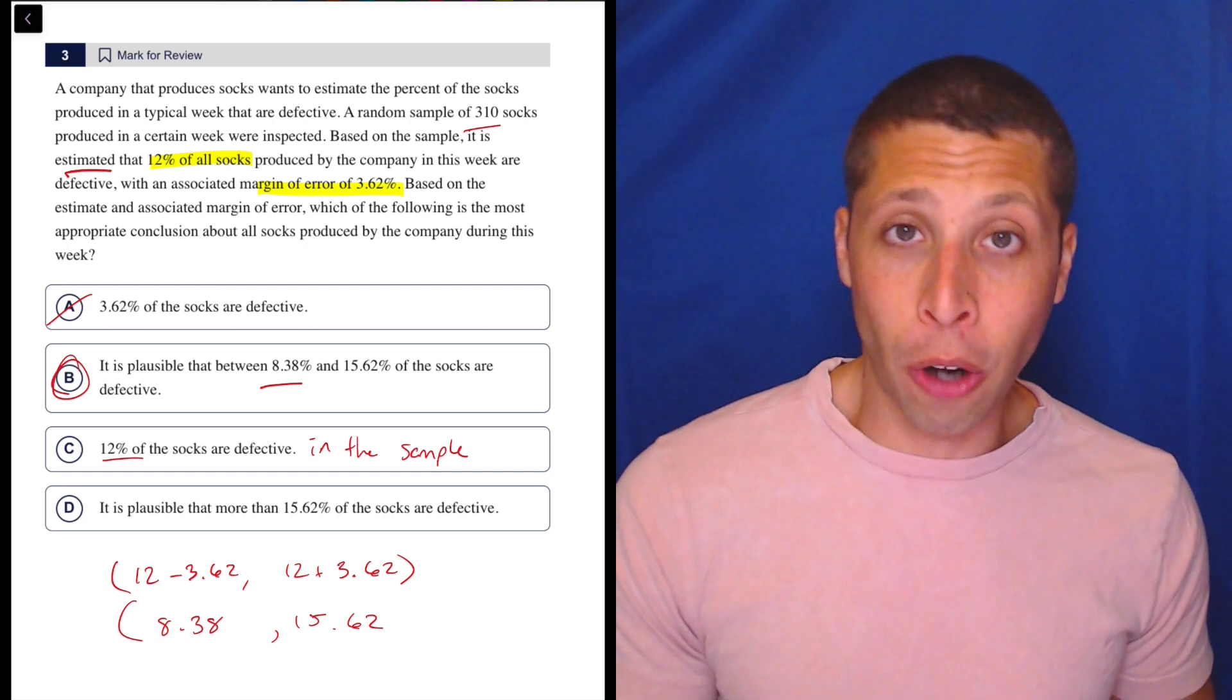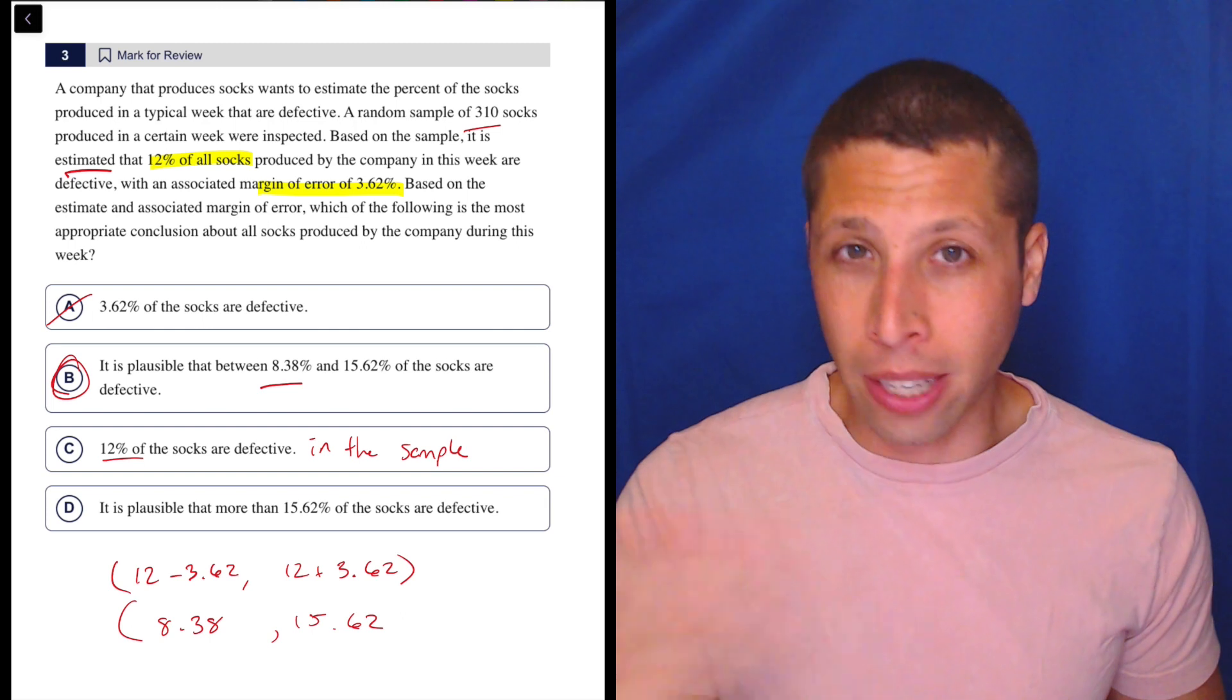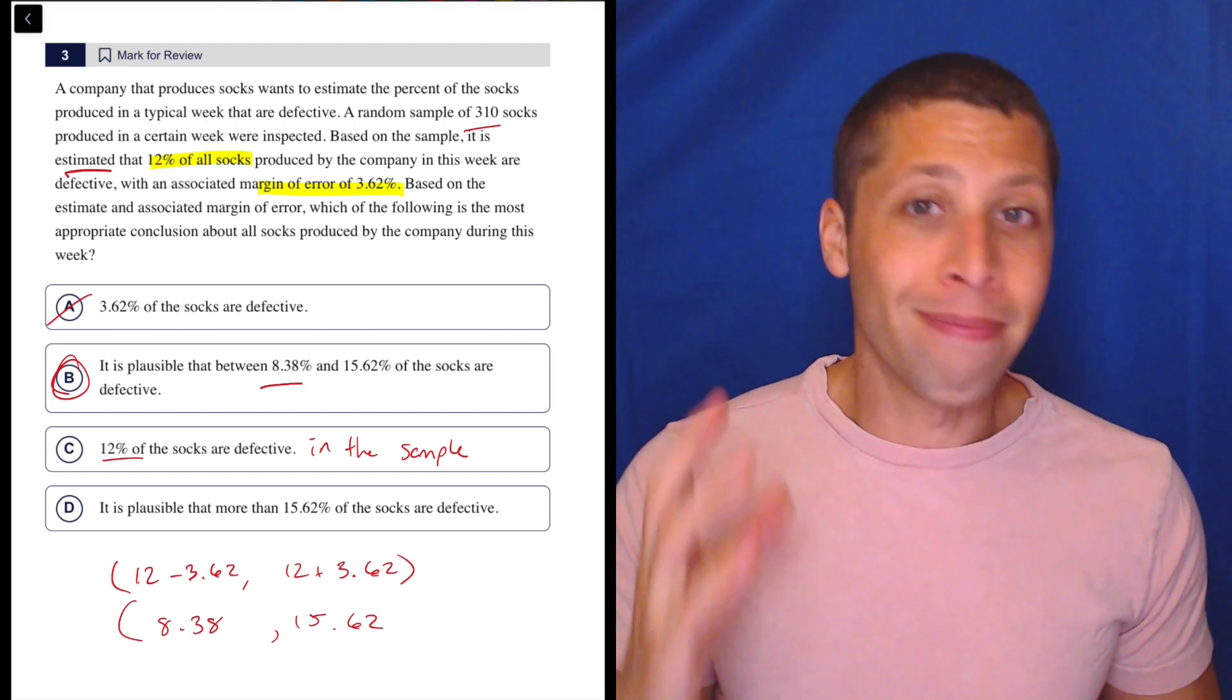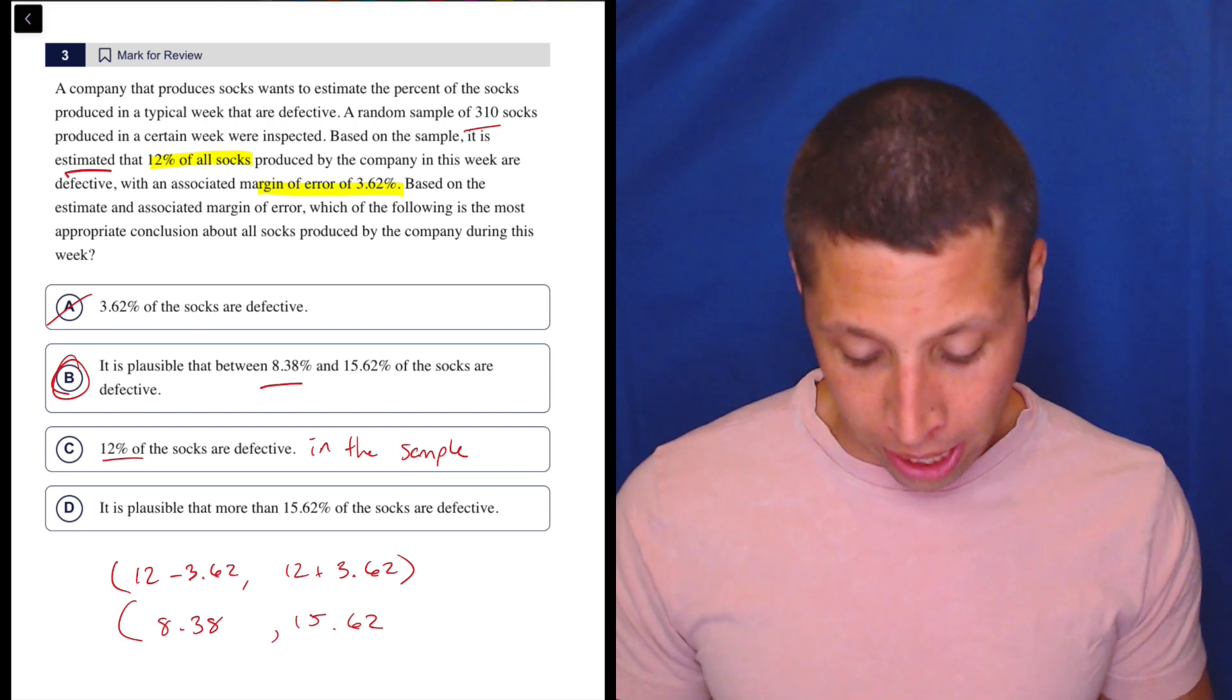But C is what they're hoping you pick. They're hoping you just kind of read it and think, okay, it's just about what they found, but margin of error is going to widen that range.